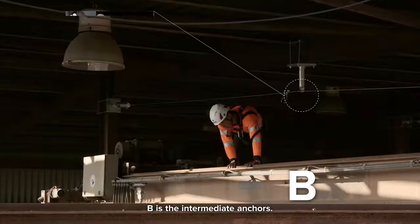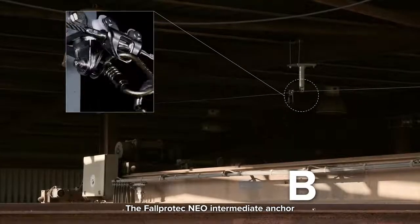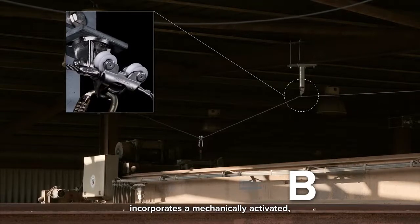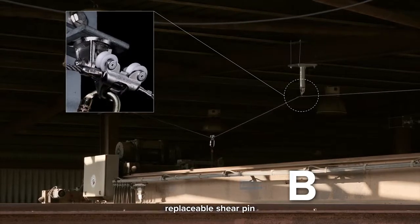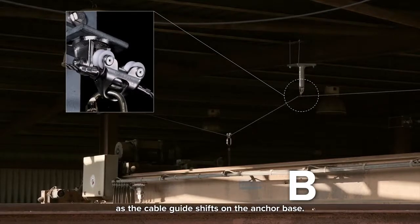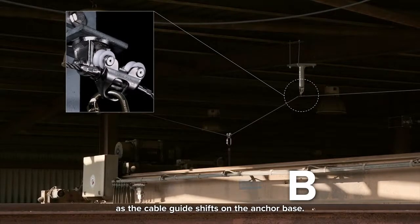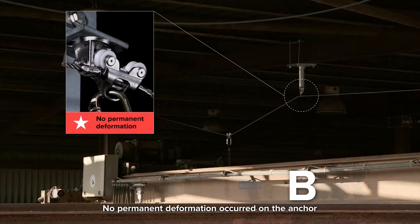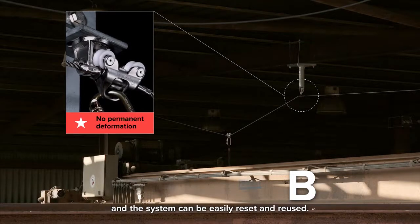B is the intermediate anchors. The FallProtek Neo intermediate anchor incorporates a mechanically activated, replaceable shear pin that is designed to absorb energy when breaking as the cable guide shifts on the anchor base. No permanent deformation occurred on the anchor, and the system can be easily reset and reused.